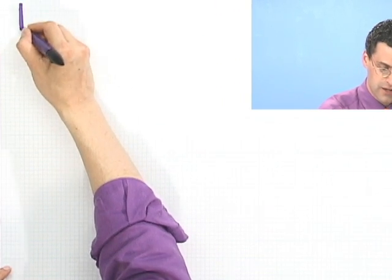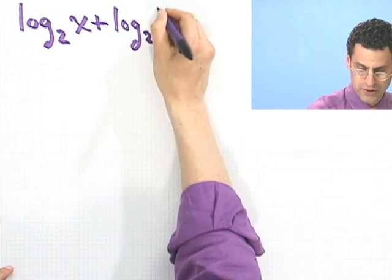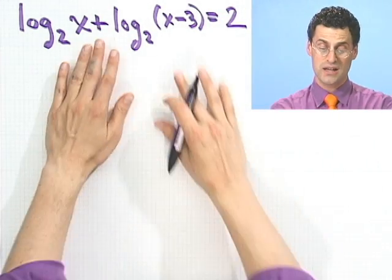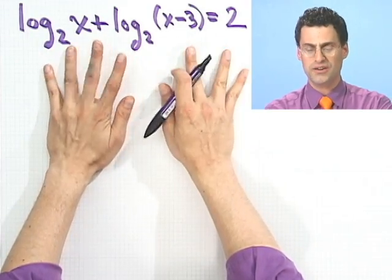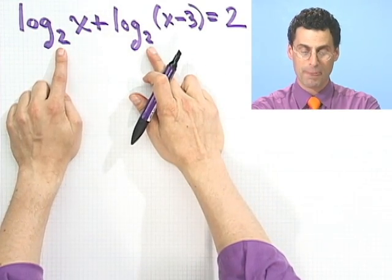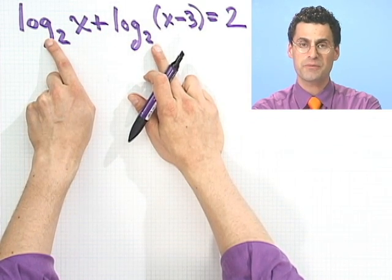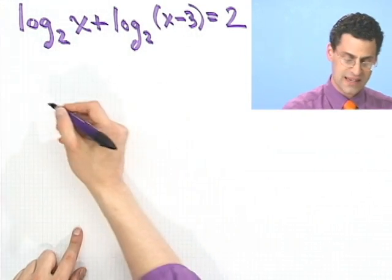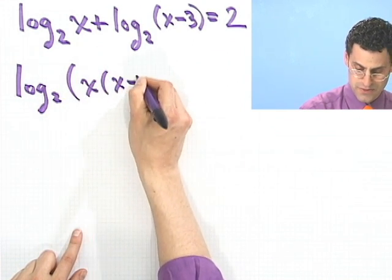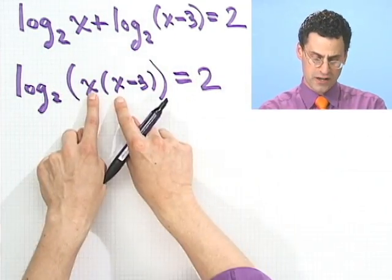Let's solve: log base 2 of x plus log base 2 of x minus 3 equals 2. I'm going to try to make one big log. I notice these are two logs with the same base, and they're being added. So I can use the property of logs that says the sum of logs is the same as the log of the product. So this is identical to log base 2 of x times (x minus 3) equals 2 — I just used the fundamental property: log of a product equals sum of the logs.